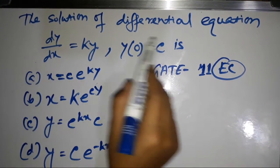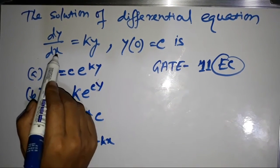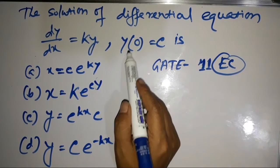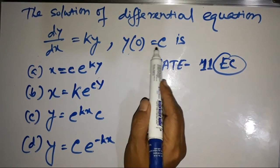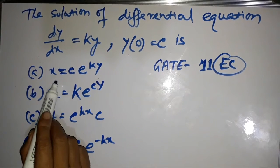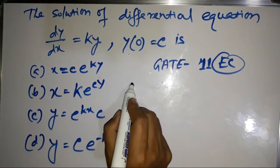The solution of the differential equation dy/dx = ky, where y(0) = c, is to be found. Four solution options are provided.